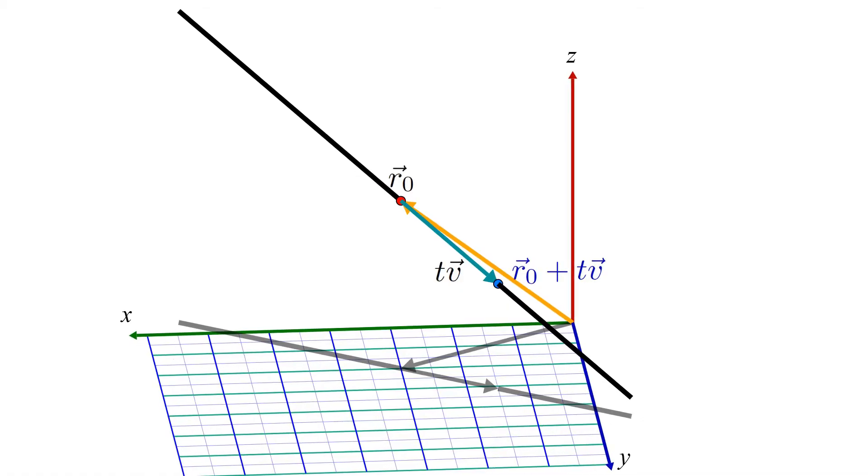The bigger t is, the longer our tv vector is, and a negative t value means we have flipped the direction vector over backwards. Since any point on the line can be reached by scaling v by an appropriate value of t, we have found a formula that neatly describes all the points on the line: r0 plus tv.